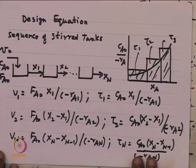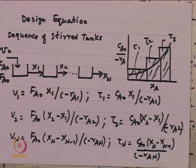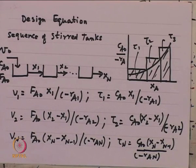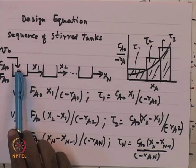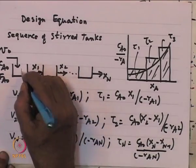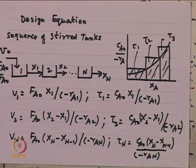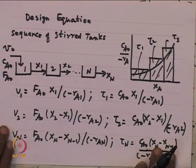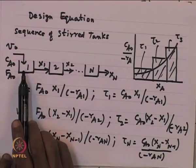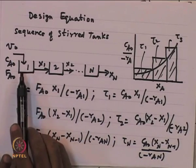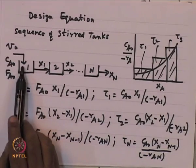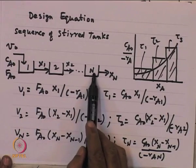We can look at a more interesting situation: a sequence of stirred tanks — reactor 1, reactor 2, up to reactor n. Fluid elements enter reactor 1, move to reactor 2, and proceed up to reactor n and come out. We have written the design equation for a CSTR: reactor volume V_1 is F_A0 times X_1 divided by (-r_A1). Reactor volume V_2 is F_A0 times (X_2 minus X_1) divided by (-r_A2), where reaction takes place at exit conditions.